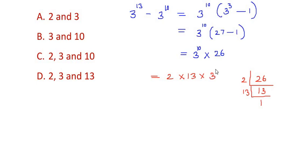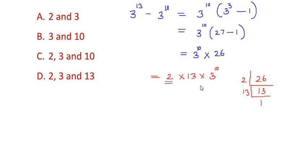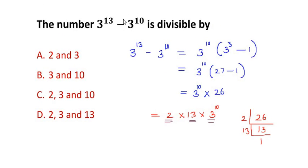So we have the number 3 to the power of 13 minus 3 to the power of 10 is divisible by 2, 13, and 3. These are the factors, hence the factors will divide the given expression. So the option is D. I hope you have understood the method and thank you for watching.